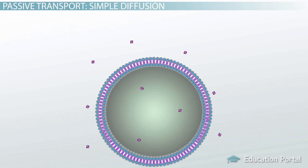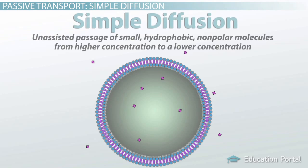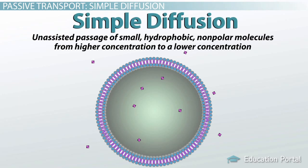Molecules that are hydrophobic, just like the hydrophobic region, can pass through the cell membrane by simple diffusion. Therefore, simple diffusion is the unassisted passage of small, hydrophobic, nonpolar molecules from a higher concentration to a lower concentration.